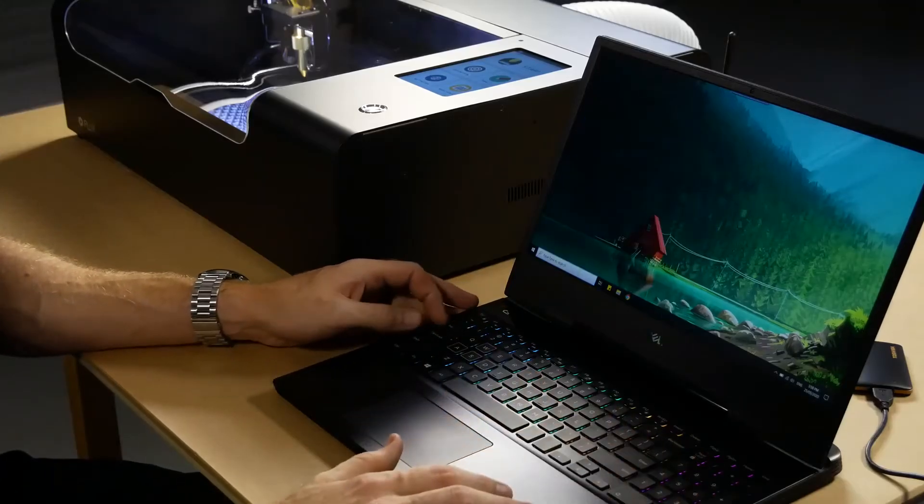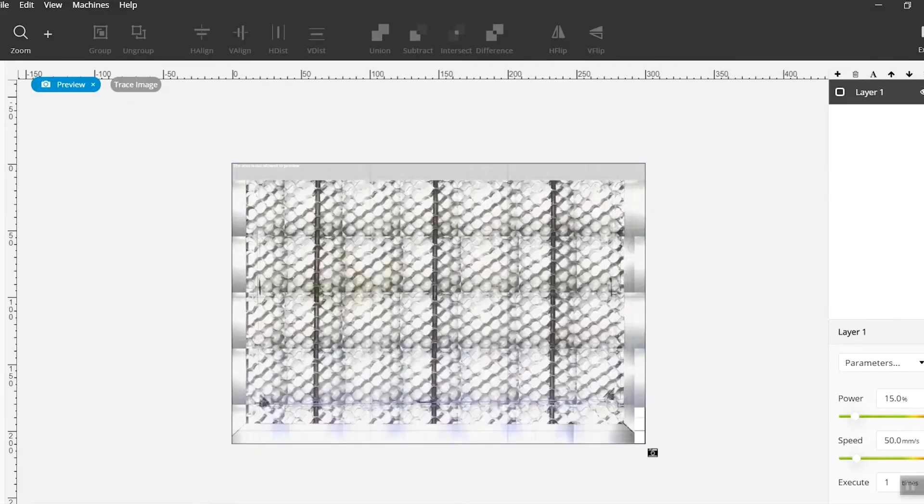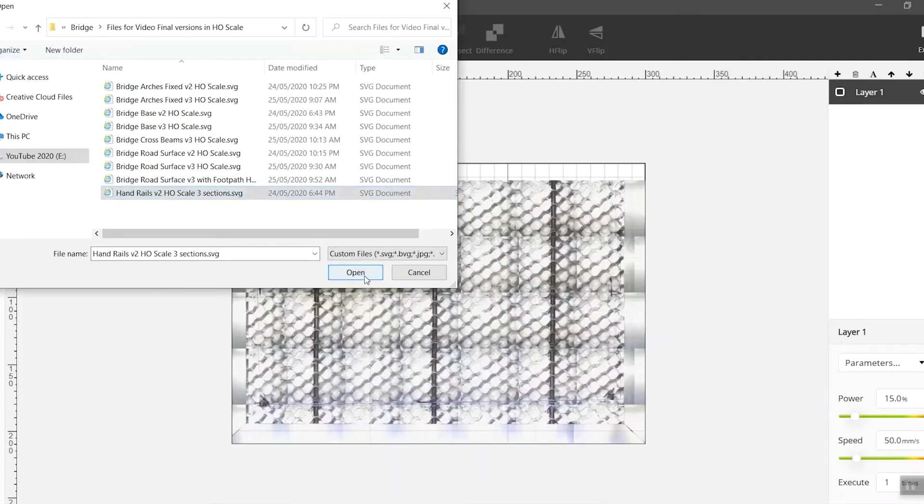It's as simple as opening up their Beam Studio program, selecting the laser cutter that is connected through Wi-Fi, and then dragging the camera icon across the build area to reveal the material ready to be cut. Now I can import the file I want to cut.